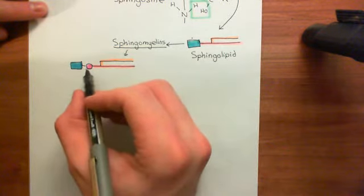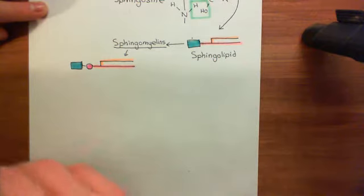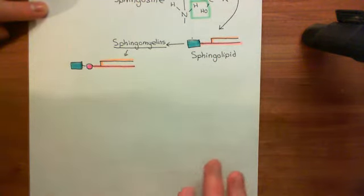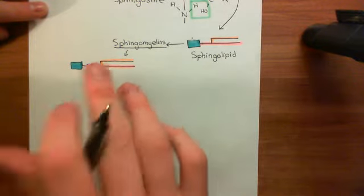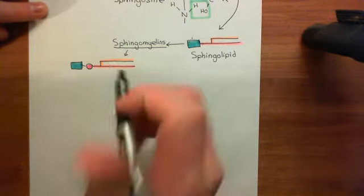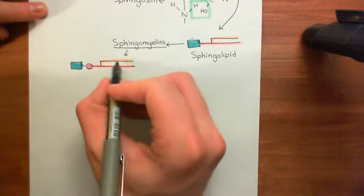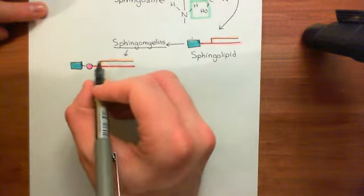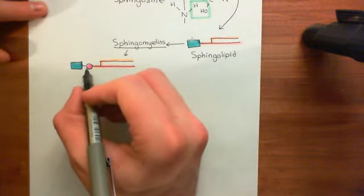Sphingolipids don't all have to have a phosphate group coming off the alcohol group of the first sphingosine carbon — there is a huge repertoire of sphingolipids that don't have that. But we're specifically interested in sphingomyelins because these are also phospholipids. They are phospholipids that are not phosphoglycerolipids, because they satisfy the definition: they have a long-chain carboxylic acid and a phosphate group within their structure.